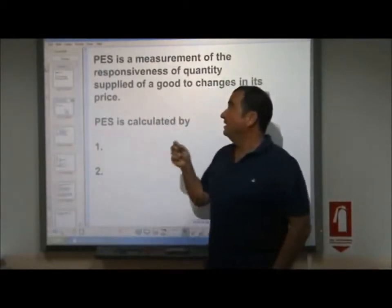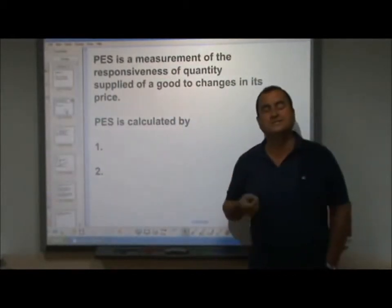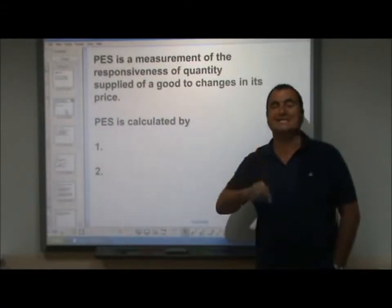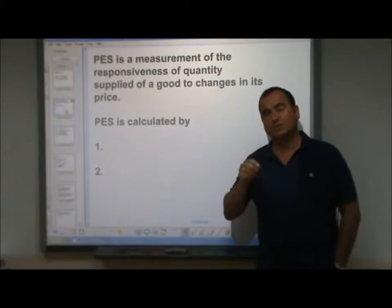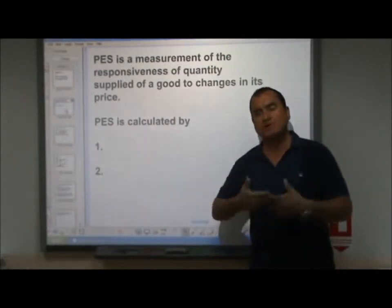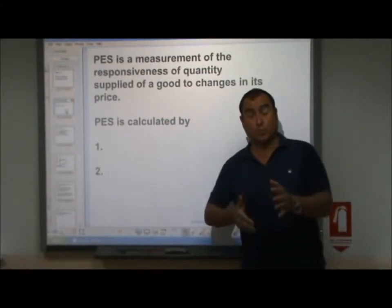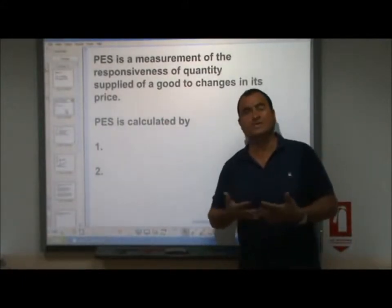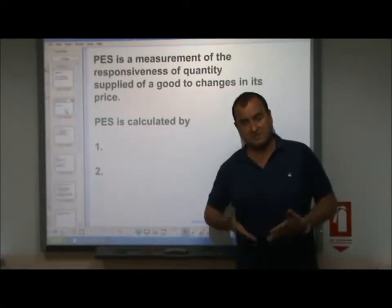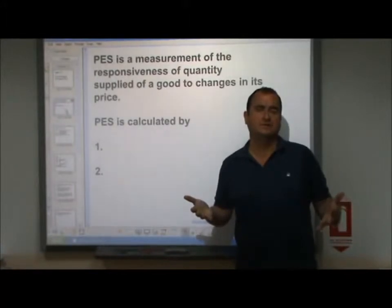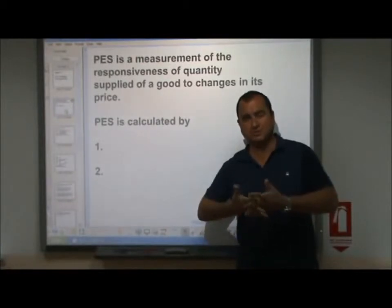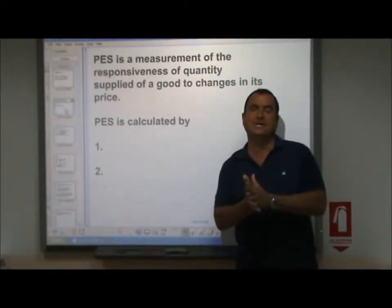It is a measurement of the responsiveness of quantity supplied of a good when its price changes. So when the price of a good changes, how easily can the suppliers react? We know that suppliers want to supply more of a good when its price rises, and less when its price falls — that's the upward sloping supply curve. But how quickly are suppliers able to react when the price changes? That's what PES is about.